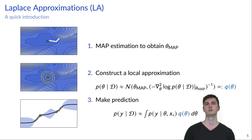This local approximation can be derived by a second order Taylor approximation of the log joint distribution. Finally, we can use this approximate posterior to make a prediction. And with this we automatically receive predictive uncertainty.